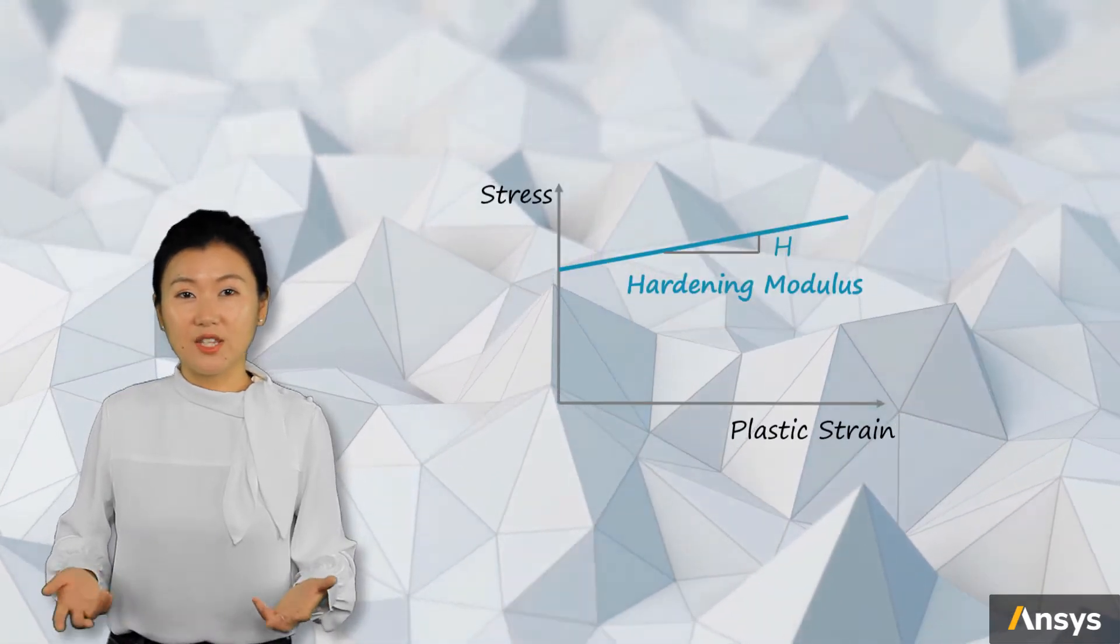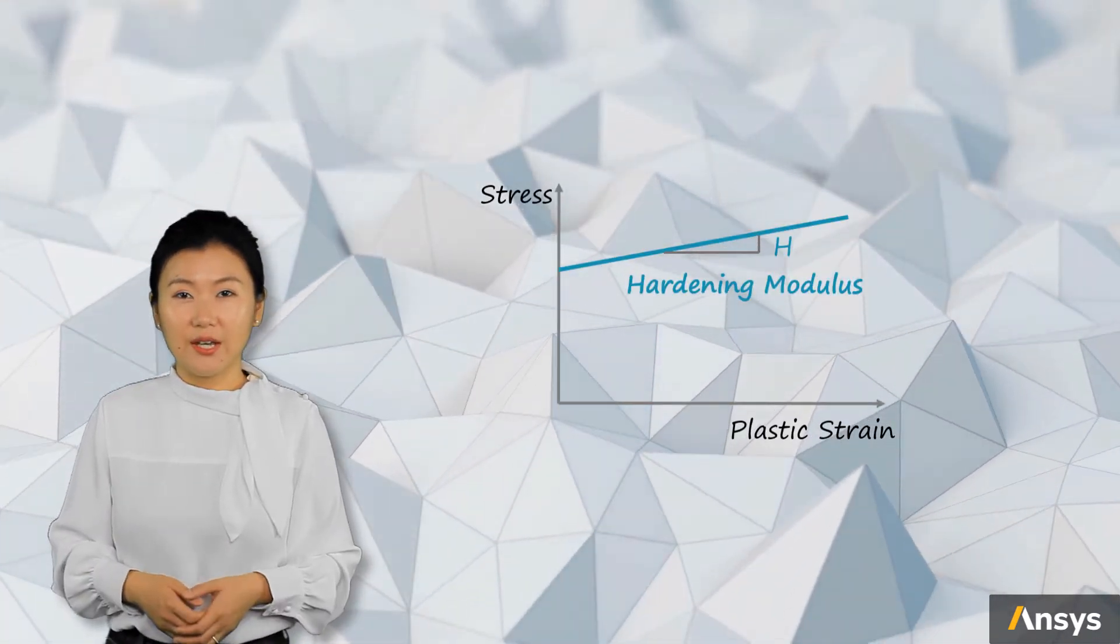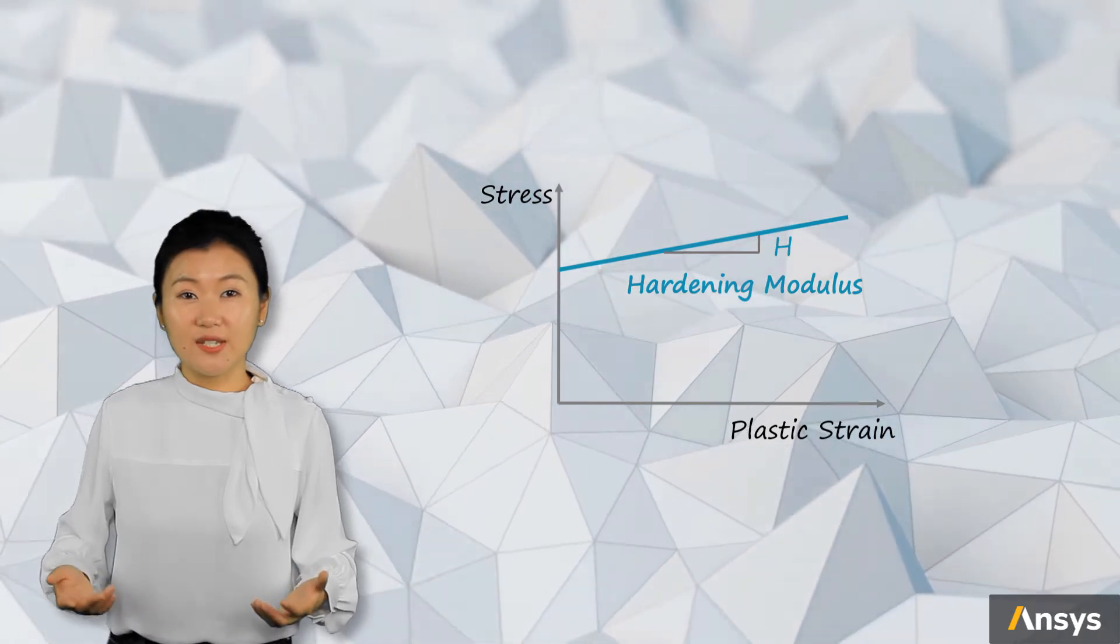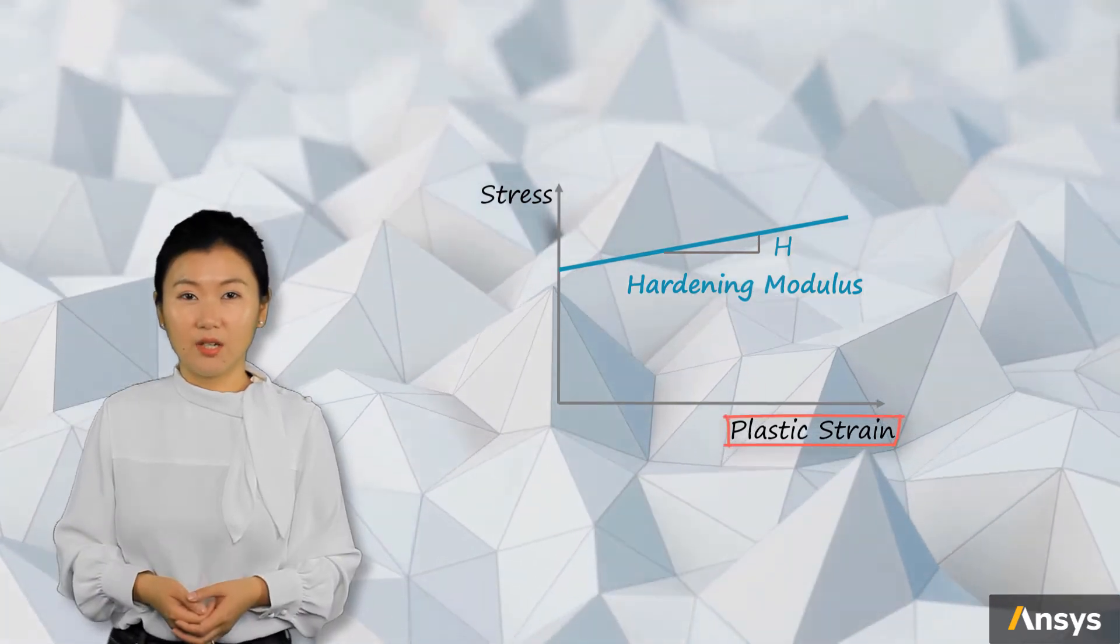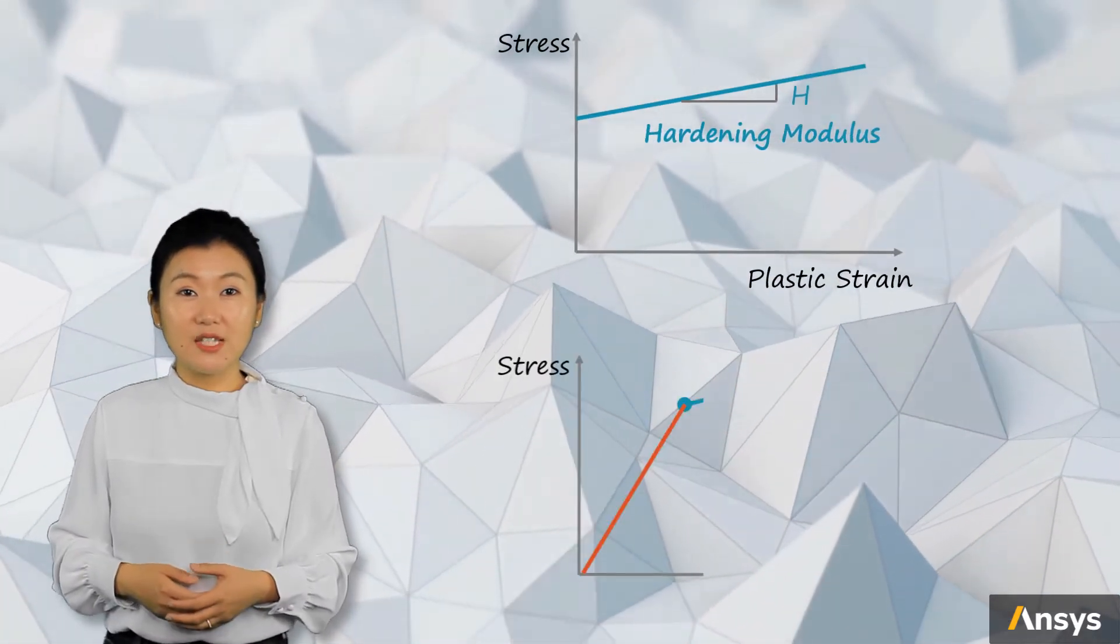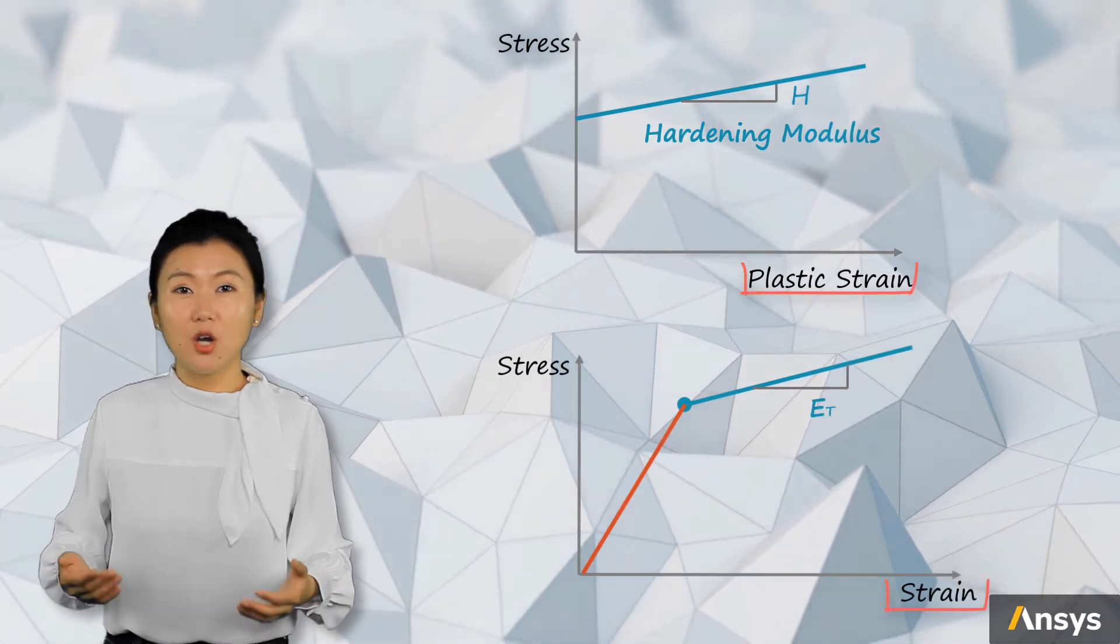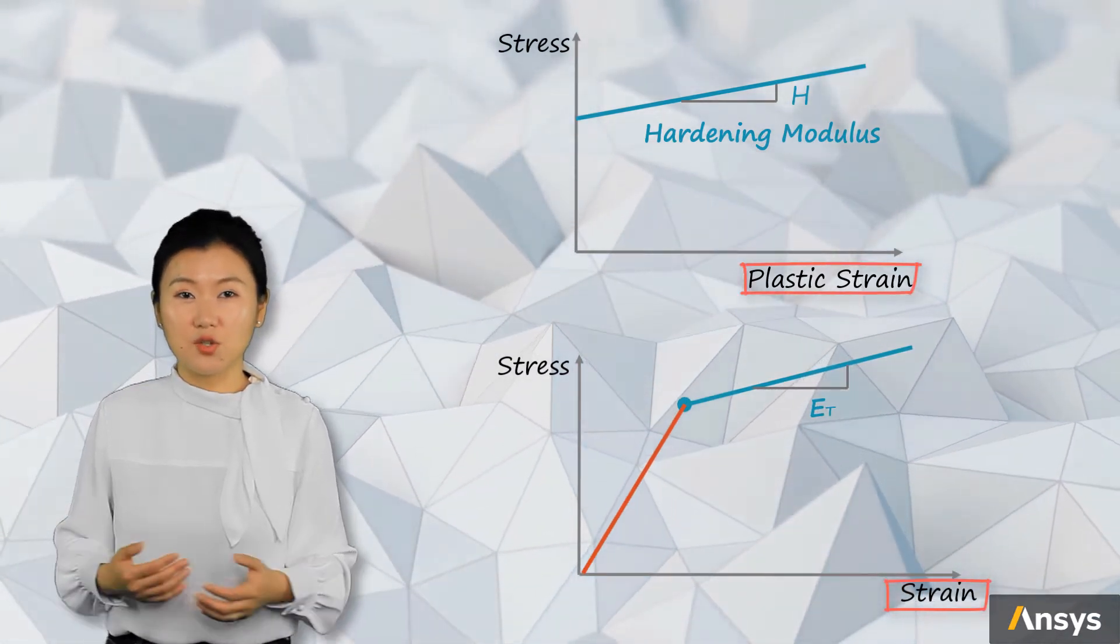The other modulus is the hardening modulus H. It is the tangent of stress versus plastic strain curve. Note that this modulus is not the tangent of the hardening part on the given stress versus total strain curve.